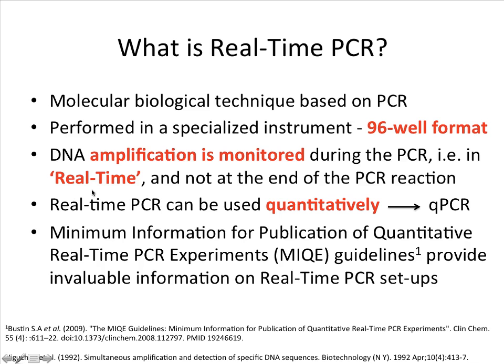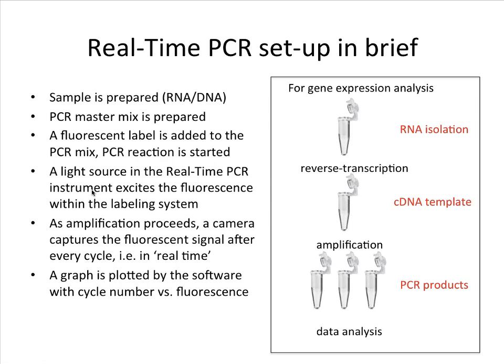A real-time PCR experiment is not all that different from a conventional PCR experiment. You start off with your sample, which is either your RNA or your DNA, which you want to amplify from. You generate a PCR master mix, which contains pretty much the same components as a standard PCR reaction: your primers, your polymerase, your PCR buffer, and so on. The major difference is that a real-time PCR master mix has a fluorescent label, and this is really the essence of the real-time PCR reaction. This fluorescent label is added to the PCR mix prior to the reaction starting.